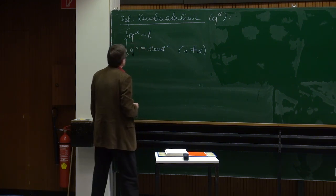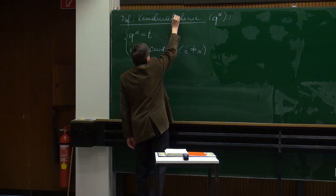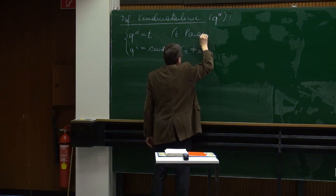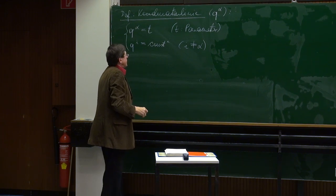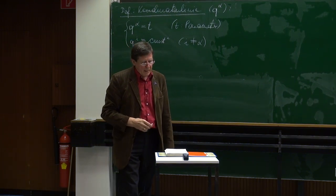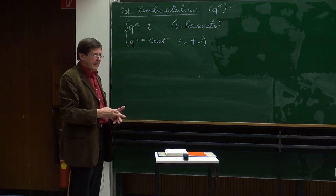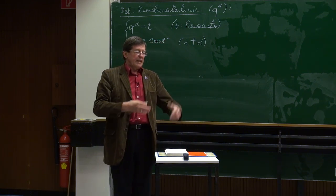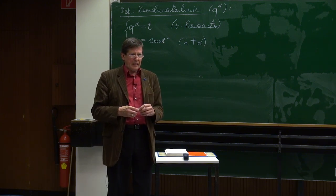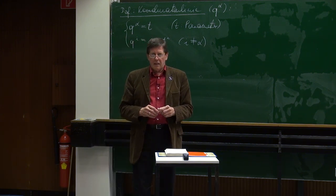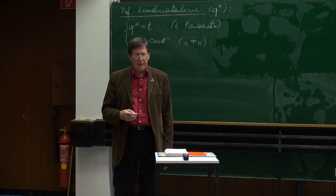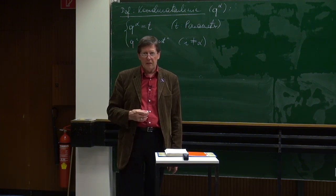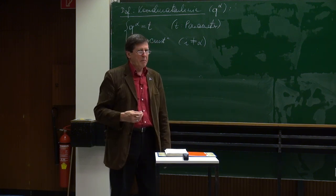Das verstehen wir unter einer Koordinatenlinie. Das mag zunächst ein bisschen unübersichtlich sein, aber wir werden uns das gleich mit einfachen Beispielen klarmachen. Wir haben hier jedenfalls eine explizite Darstellung einer Koordinatenlinie mit einem Parameter T. Andererseits wollen wir jetzt eine Koordinatenfläche oder allgemeiner eine Koordinatenhyperfläche definieren. Ich möchte das etwas allgemeiner als nur bis zum Dreidimensionalen behandeln, weil diese Dinge insbesondere für den Bereich der relativistischen Physik von Bedeutung sind, wo die betrachtete Mannigfaltigkeit vierdimensional ist.